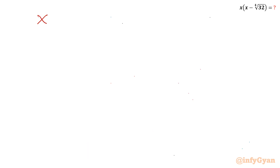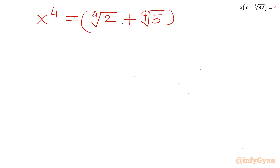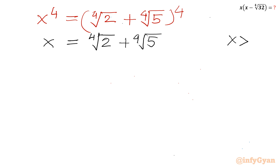Let me write this clearly. x⁴ = (⁴√2 + ⁴√5)⁴. Now since x is positive and real, taking the fourth root of both sides gives us directly: x = ⁴√2 + ⁴√5, since x is positive and belongs to the real numbers.